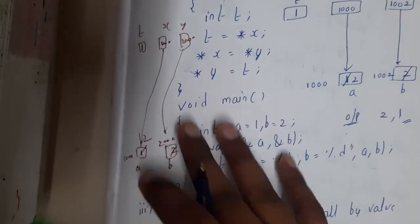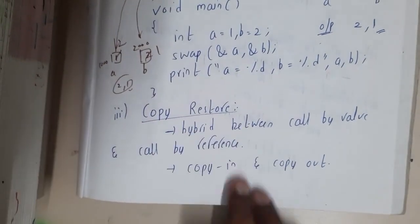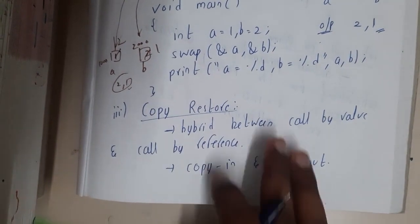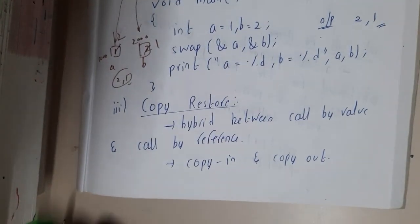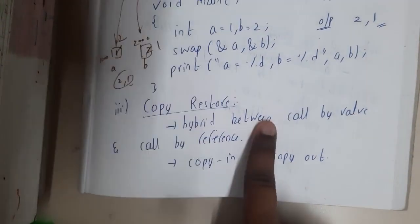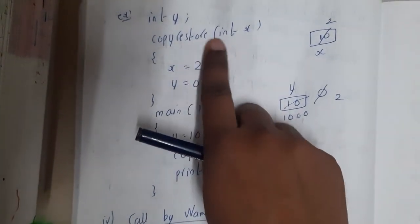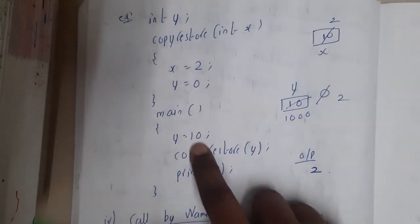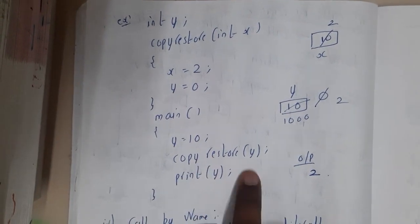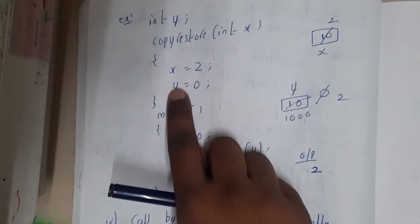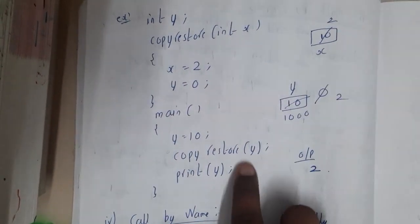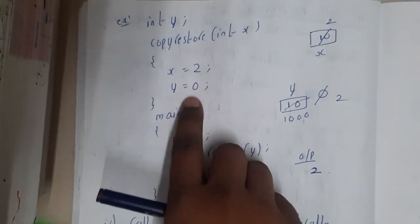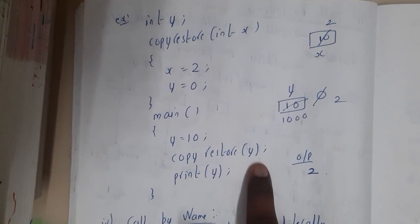Copy restore is a hybrid method between call by value and call by reference — copy-in and copy-out. There will be two different operations. For example: into y copy_restore(x); x = 2; y = 0; in main, y = 10; copy_restore(y); print(y). Initially y is 10, so x gets 10 (copy-in). Then x is updated to 2. At the end that value is copied back — y gets 2 (copy-out), so you'll print 2.